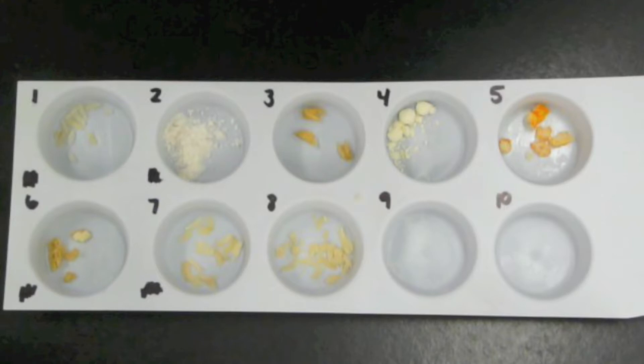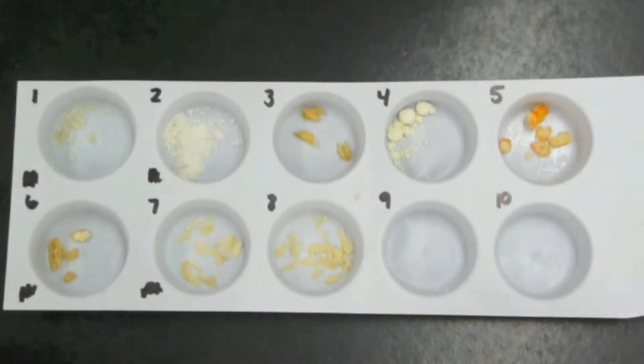In this lab we will be testing different foods for protein. Once again our test material is going to be kumasi blue powder or protein test strips. The first thing we are going to do is soak these foods in water.